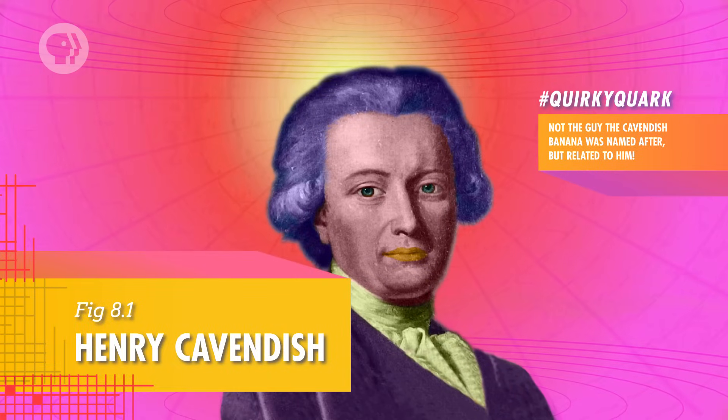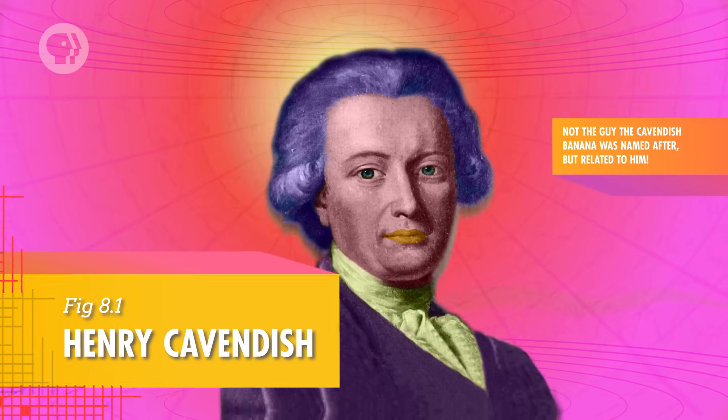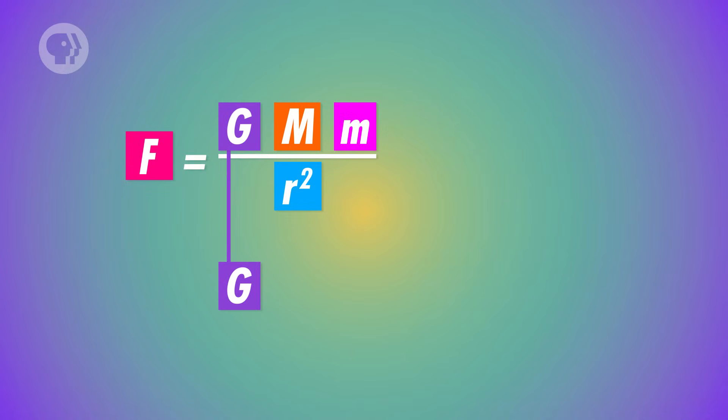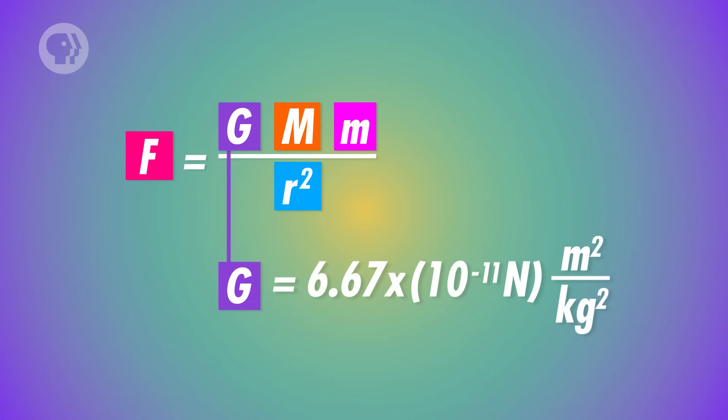About a century later, Henry Cavendish, another British scientist, made careful measurements with some of the most sensitive instruments of the time. He figured out that G was equal to about 6.67 times 10 to the negative 11th Newton's times meter squared over kilograms squared. Newton was right about big G having to be quite small. But even though he didn't know the exact value of big G at the time, Newton had enough to establish his law of universal gravitation.